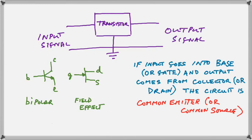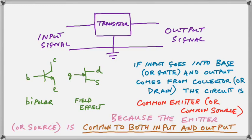Now, if the input goes into the base or gate and the output comes from the collector or drain, the circuit is called a common emitter or a common source, depending on which transistor we're dealing with. Because the leg emitter or source of the transistor is connected to that ground or common of the circuit. The emitter or source is going to be therefore common to both the input and the output signal.